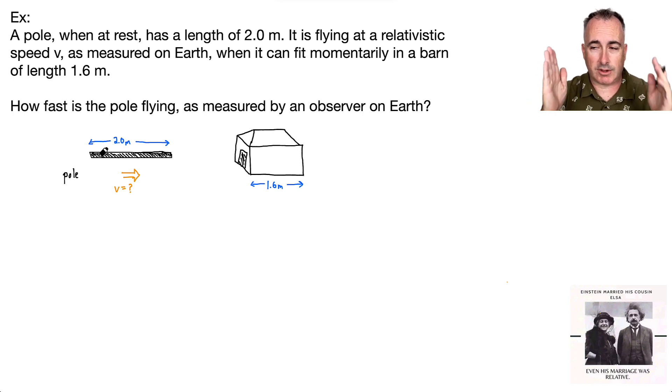So this pole is two meters long, and it's going to momentarily appear to fit into 1.6 meters. The question is, how fast is it going? Let's write down our variables. Do we know L0, the proper length? The proper length would be the one for whom the object is at rest, so that would be two meters. L is going to appear to be 1.6 meters, and the question is v equals, we don't know that.